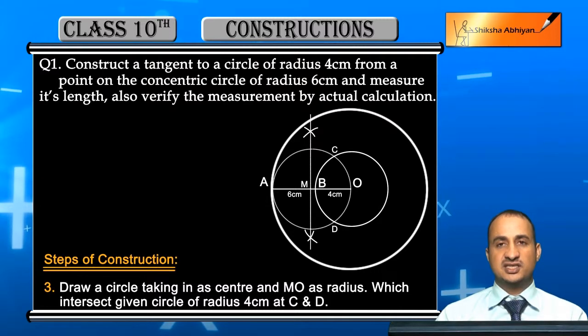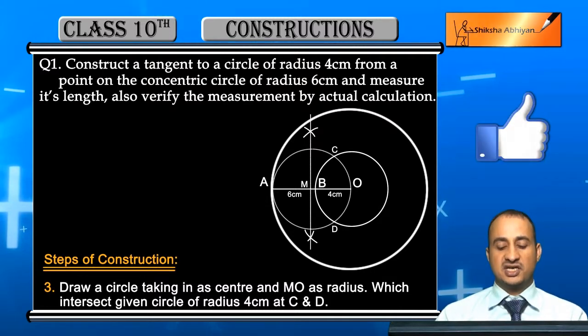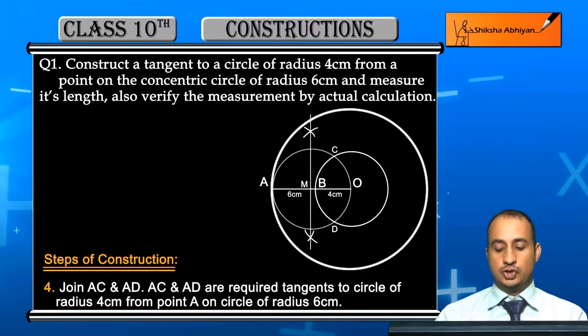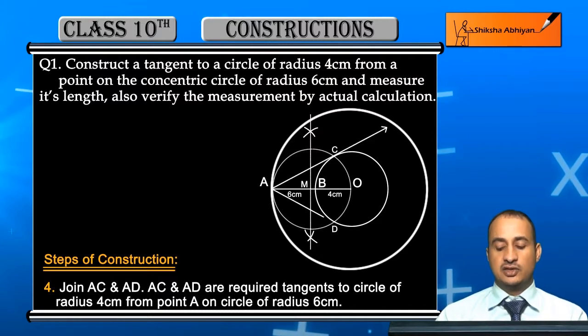At C and D, C and D two points par intersect kara hai 4 cm wale circle par. Now student, join AC and AD ko aap join karo. Yeh aapko do tangent mil gayi, so AC and AD are required tangents to circle of radius 4 cm.